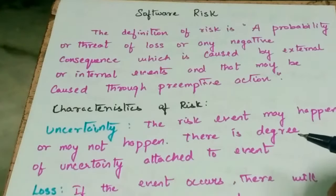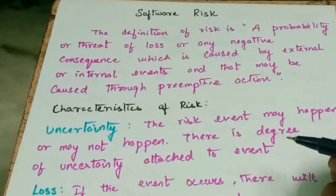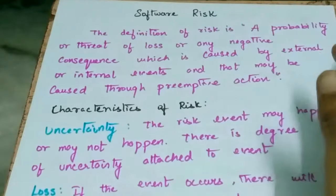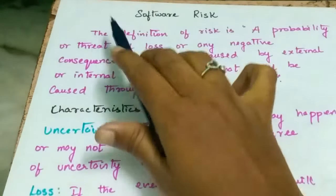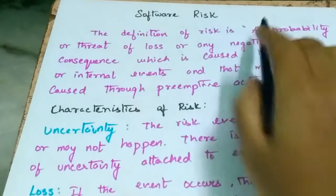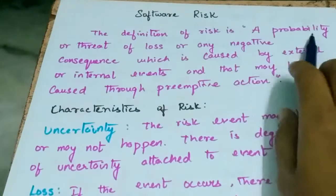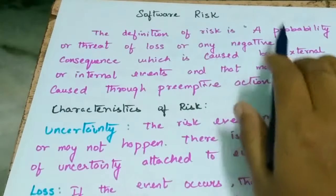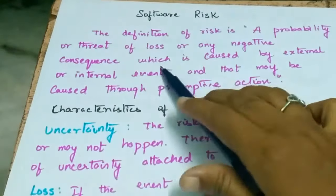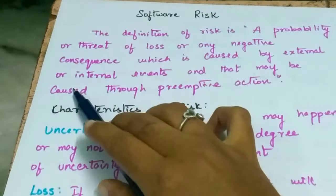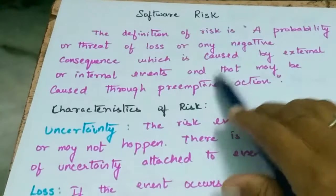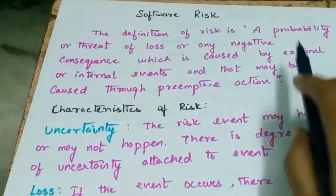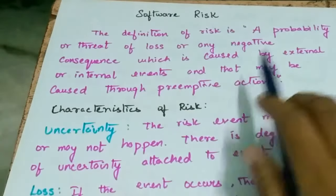Hello friends! Next, we will talk about the topic of software engineering and the software risk. The definition of risk is a probability or threat of loss or any negative consequence which is caused by external or internal events, and they may be addressed through preventive action.